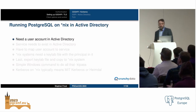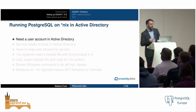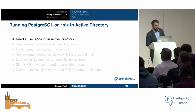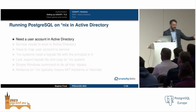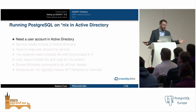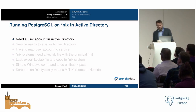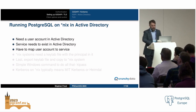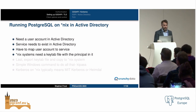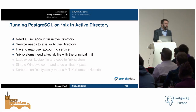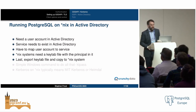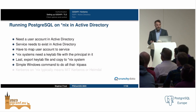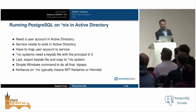When running Postgres on Unix inside an Active Directory environment, if you want Postgres directly integrated with AD, you need a user account in Active Directory and the service must exist in AD. Then you map that user account to that service. The Unix system will need a keytab file with that service principal information — that's the shared secret between the KDC and the service. You'll export that keytab file and copy it to the Unix system. There's a simple Windows command to do all of that: KTPass.